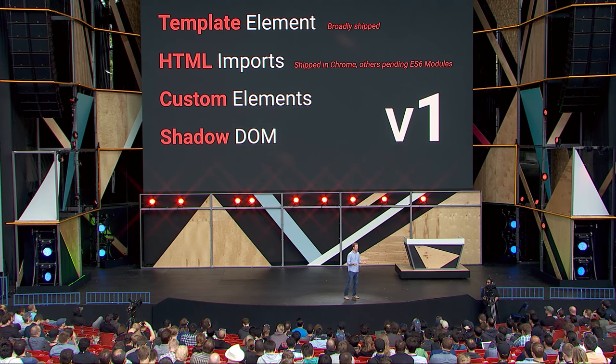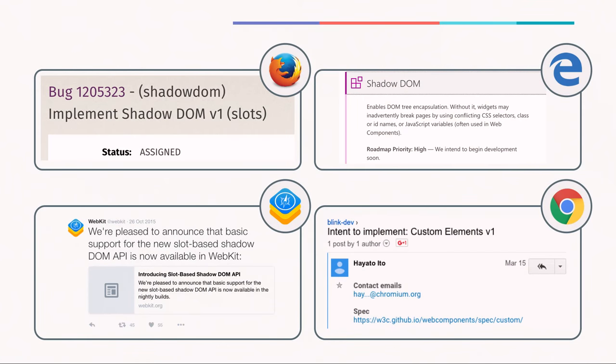V1 is the latest iteration of these two specs. Most importantly, all major browser vendors are on board with driving implementations of these V1 specs. Firefox, Edge, Safari, and Chrome were all at the table and involved in the spec discussions. It's a high priority roadmap item for the Edge team to implement. Firefox and Chrome implementations of V1 are already well underway. And Safari already has working versions of V1 Shadow DOM and custom elements in their nightly builds.